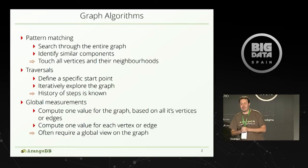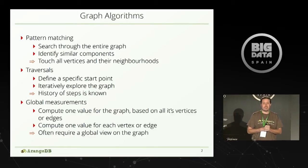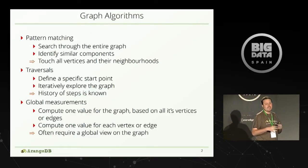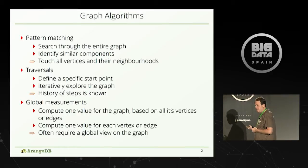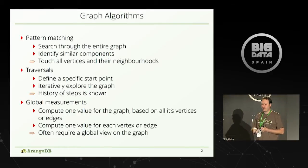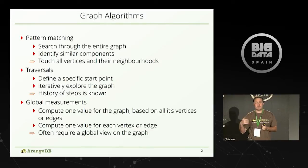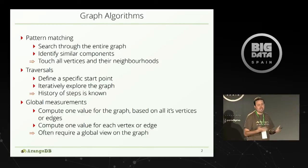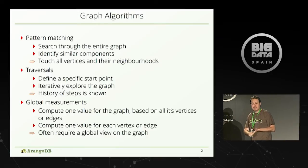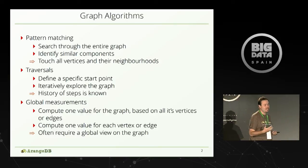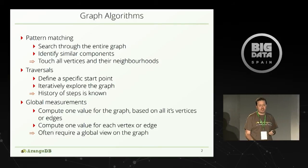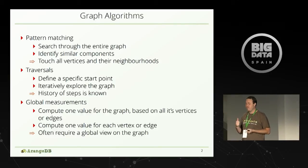The last category is what I call global measurements. The idea is to compute one value for the complete graph based on its vertices or edges — for example, the count of vertices or edges, simple things, but also radius and diameter. Or I can compute one value for each vertex or edge — for example, the PageRank of the graph, which is one value for each vertex.